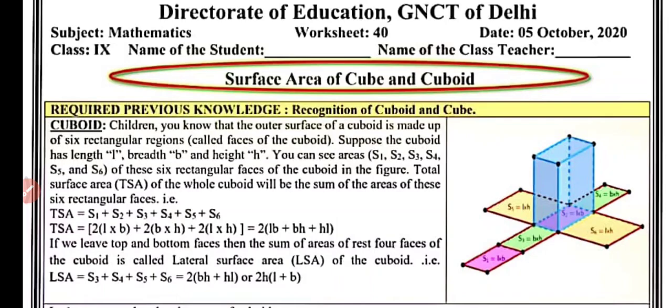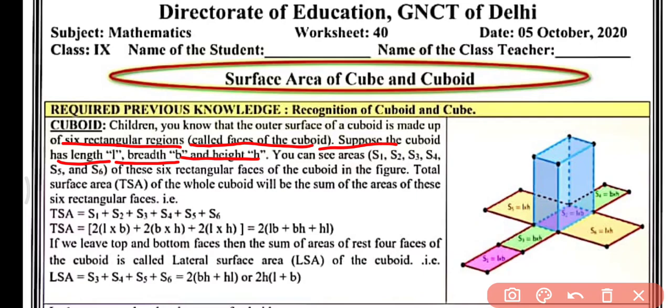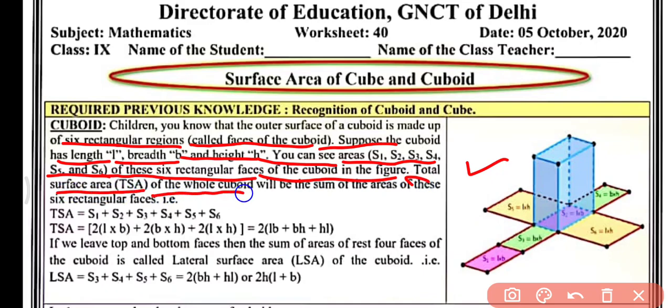We will talk about the surface area of cube and cuboid, so you need to know about the cube and cuboid. The outer surface of a cuboid is made up of six rectangular regions called the six faces of the cuboid. Suppose the cuboid has length l, breadth b, and height h. The areas S1, S2, S3, S4, S5, and S6 of these six rectangular faces are shown in the figure, and the total surface area (TSA) of the whole cuboid will be the sum of areas of these six rectangular faces.